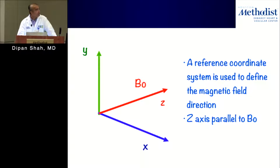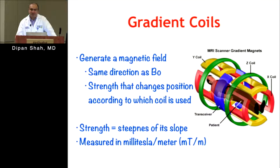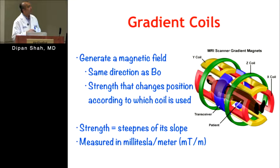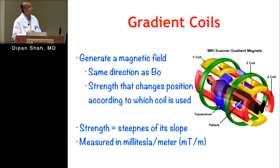Let's go into more detail about gradient coils. The gradient coils are within the MRI system itself. Their purpose is to generate an alteration to the magnetic field. They're aligned in a variety of directions — in the same direction as B-naught, the main magnetic field, but also in other directions. You essentially have a gradient in all three directions of the XYZ coordinate system. The strength of the gradient is measured as the steepness of the slope in millitesla per meter.